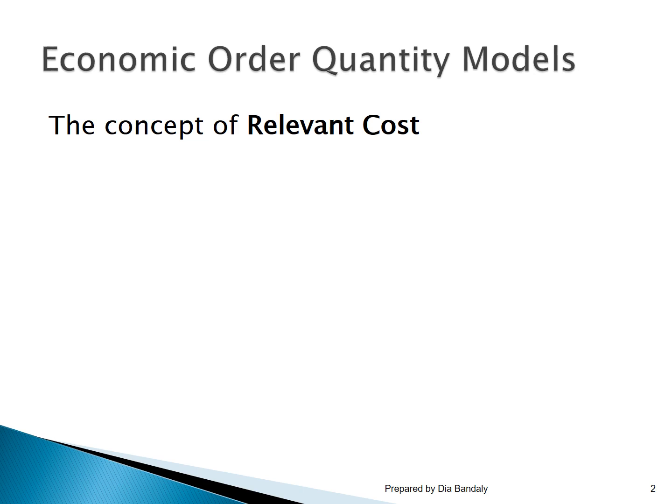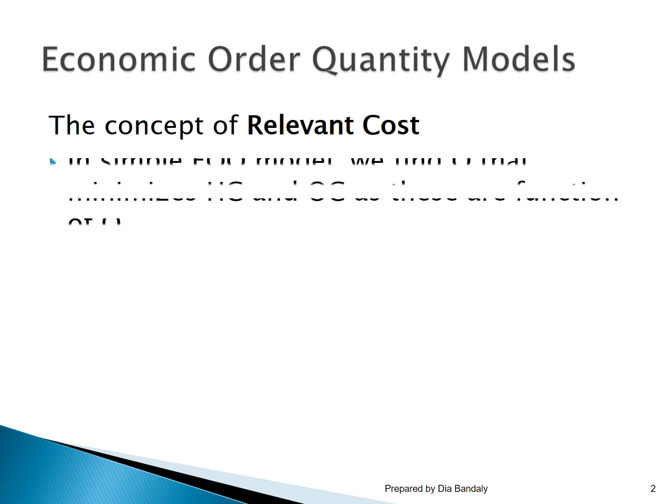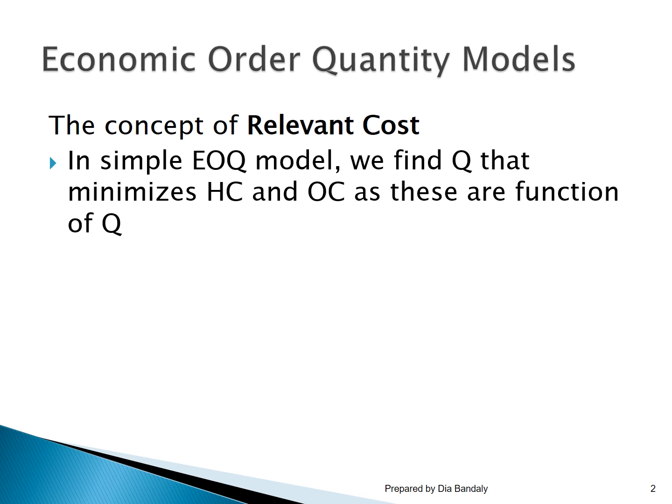Before we start our explanation for the EOQ with quantity discount model, let's talk about a very important concept: the relevant cost concept. Let's remember what we did in the EOQ model. The objective was to find the quantity that minimizes the sum of the holding costs and the ordering costs.